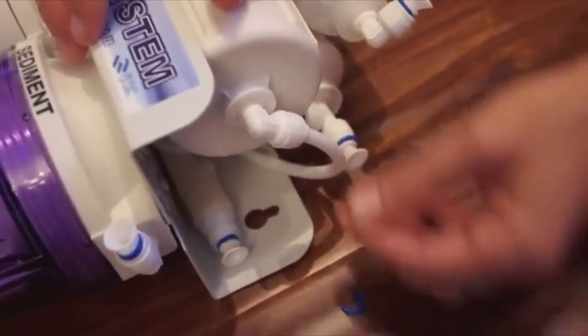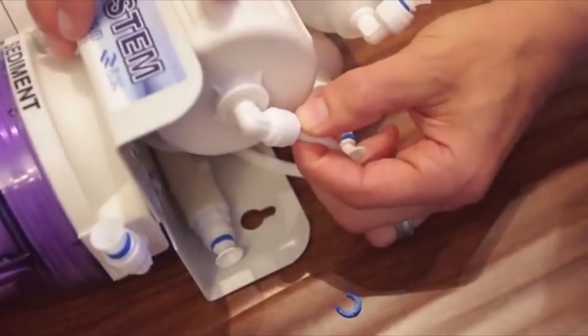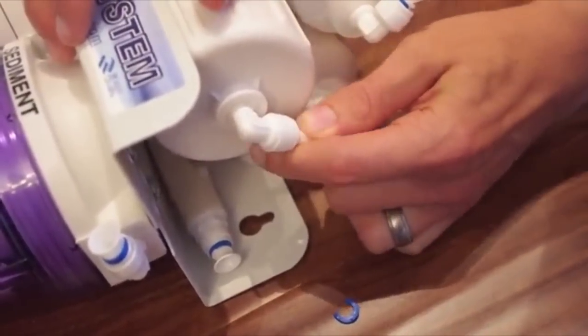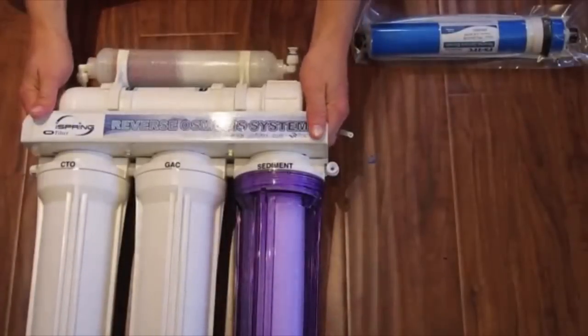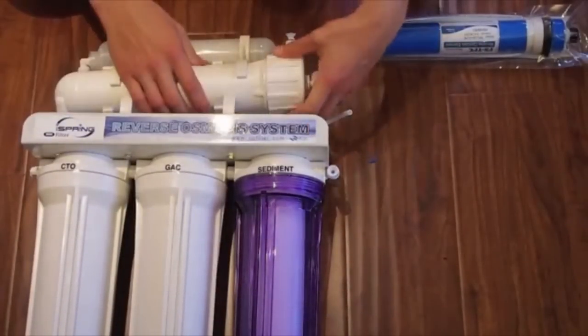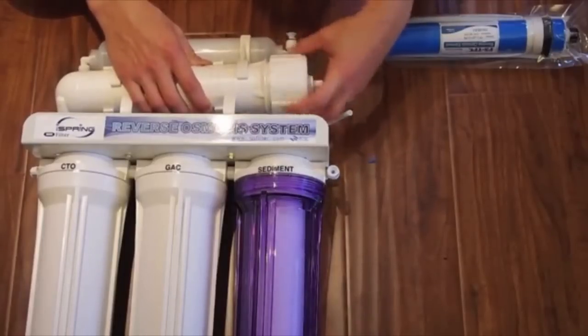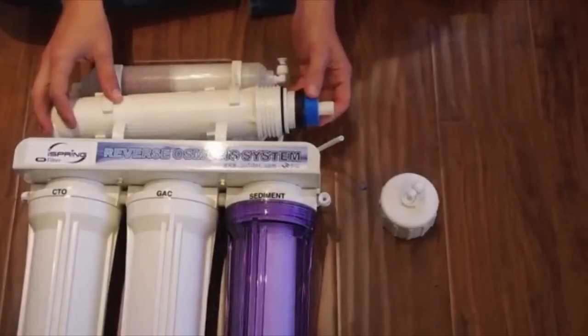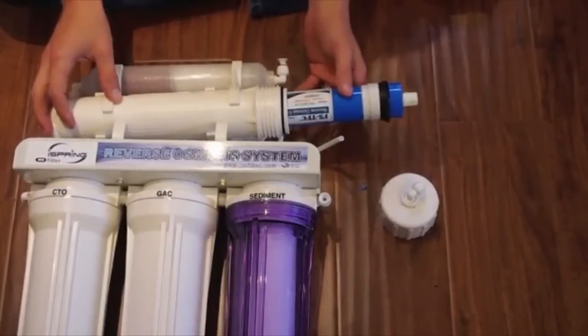For the RO membrane, remove the tubing from the cap. Lift the housing from the U-clips and remove the cap. You may need pliers to remove the old membrane.